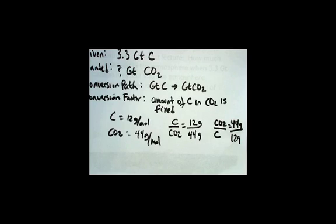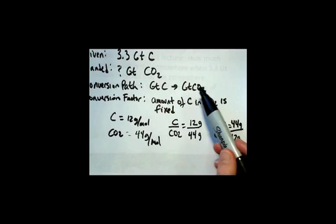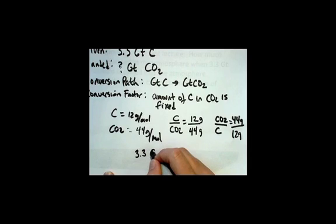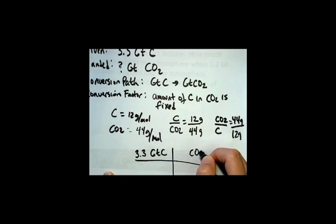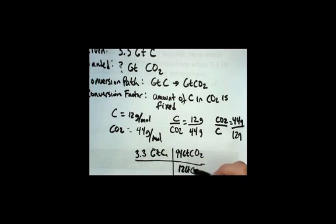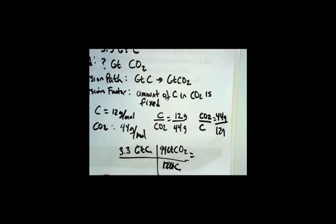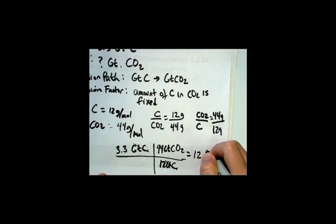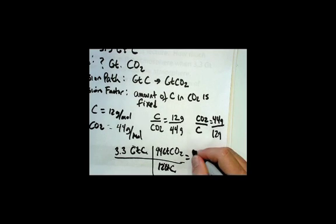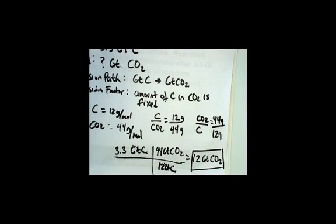Since I need to convert from gigatons of carbon to gigatons of carbon dioxide, I'm going to start with what's given: 3.3 gigatons of carbon. I'd like to know how much mass of carbon dioxide that is. Then I'm going to have my unit of carbon on the bottom. Since this is a ratio, it doesn't matter what unit I use as long as it's a mass unit. The ratio is 44 grams to 12 grams - it's also 44 kilograms to 12 kilograms or 44 gigatons to 12 gigatons. Then this unit would cancel. We do the math: 3.3 times 44 divided by 12 is 12 gigatons of carbon dioxide. So that's how much carbon dioxide we're releasing per year into the atmosphere that needs to be dealt with. That's a lot of carbon dioxide.